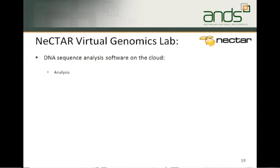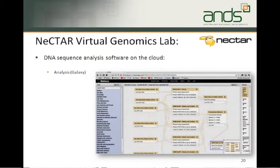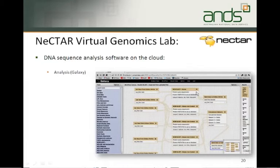The other very important aspect for the VGL is an analysis package called Galaxy, which is widely used in biology. It's effectively a workflow generator of web services, where each web service performs a very small and specific bioinformatic task. Users can compose these into incredibly complex workflows — doing this process first, then that process, and so on — to take input data, run it through many processes, and generate output data.